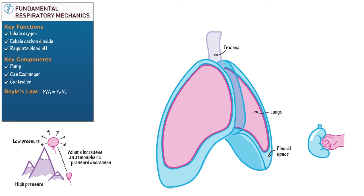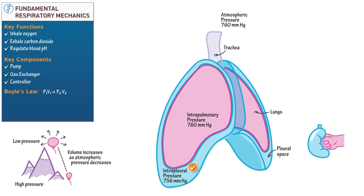Label the following pressures which dictate the movement of air during inspiration and expiration. Atmospheric pressure is 760 mmHg, external to the thoracic cavity. Intrapulmonary pressure — also known as intra-alveolar pressure — refers to the pressure within the lungs and equals atmospheric pressure at rest. Intrapleural pressure is 756 mmHg, referring to the pressure in the pleural space. We'll discuss the role of the pleural cavity in gas exchange elsewhere.